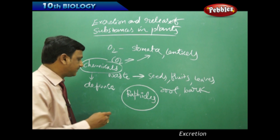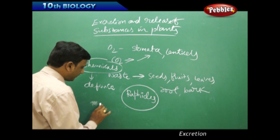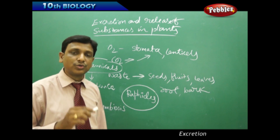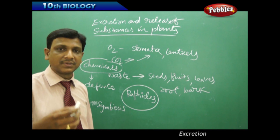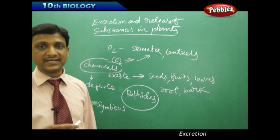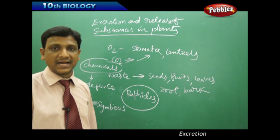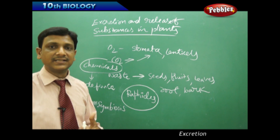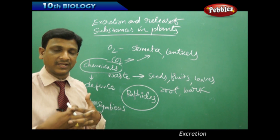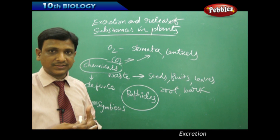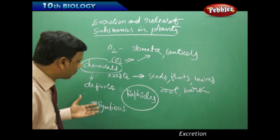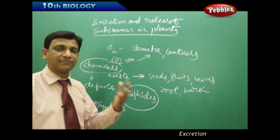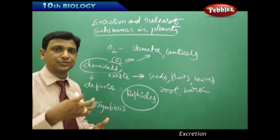Sometimes waste-derived chemicals help in symbiosis — mutual benefit. For example, leguminous plants have root nodules. These root nodules secrete chemicals that attract rhizobium bacteria. The rhizobium bacteria in turn help the plant, and the plant helps the rhizobium bacteria. There is mutual cooperation between the bacteria and the root nodules of the leguminous plants in fixing nitrogen. So the waste is converted into a useful metabolite for symbiosis.